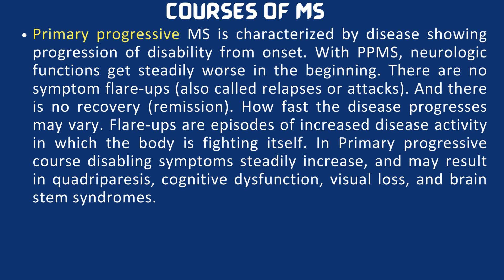Primary progressive multiple sclerosis is characterized by disease showing progression of disability from onset. With PPMS, neurologic functions get steadily worse from the beginning. There are no relapses or attacks and no remissions. The rate of progression may vary. In the primary progressive course, disabling symptoms steadily increase, and it may result in quadriparesis, cognitive dysfunction, visual loss, and brainstem syndromes.